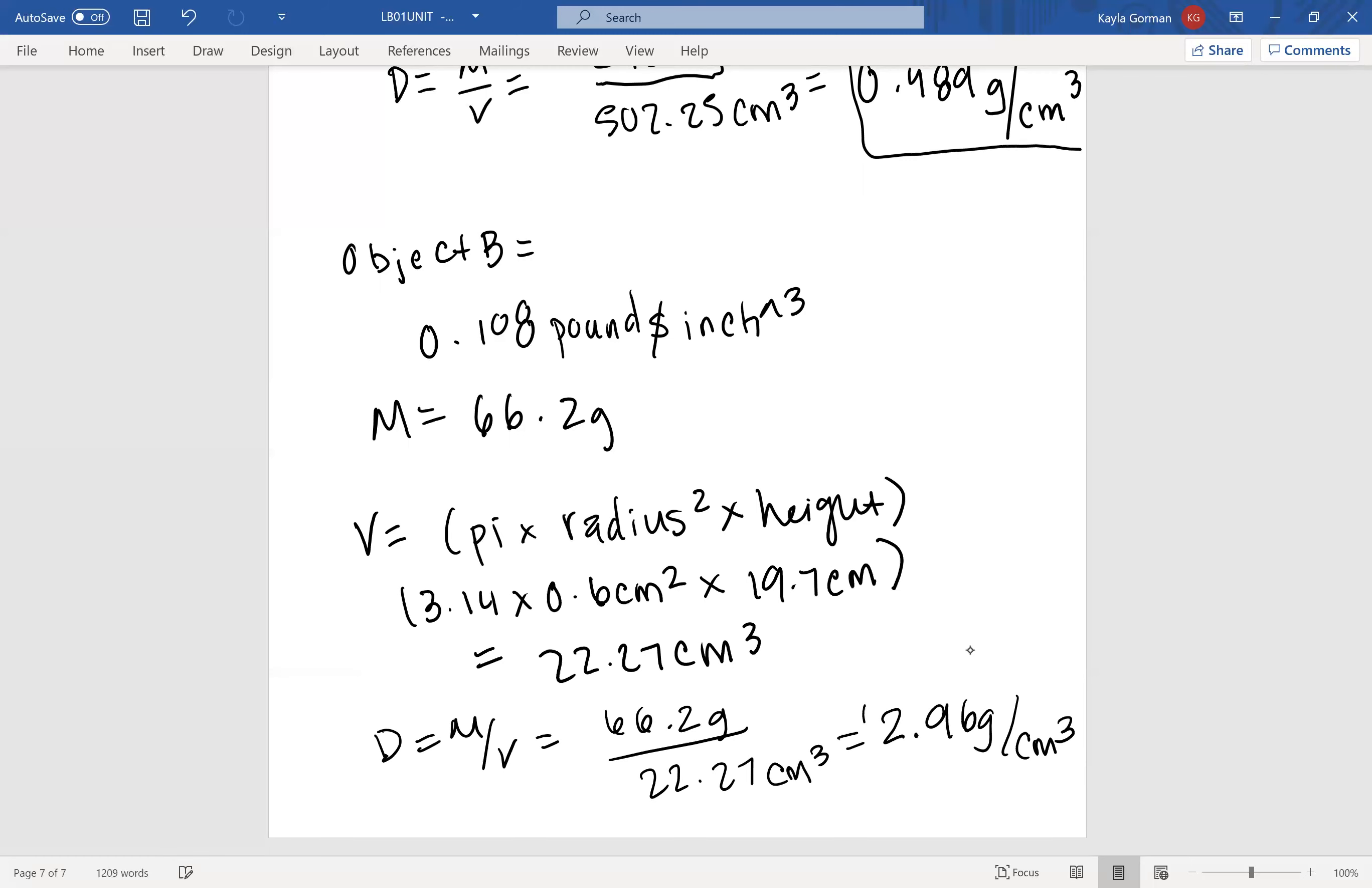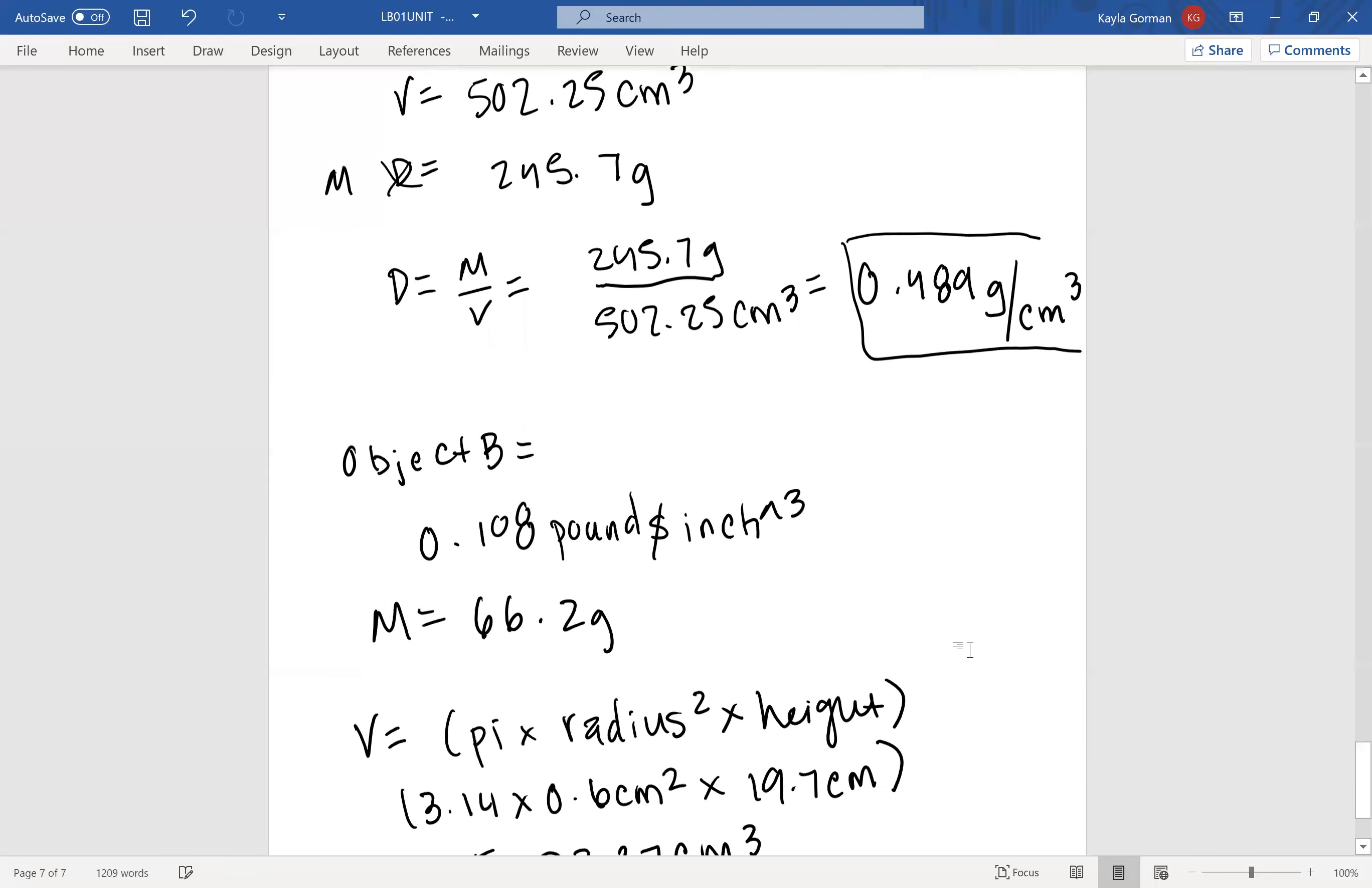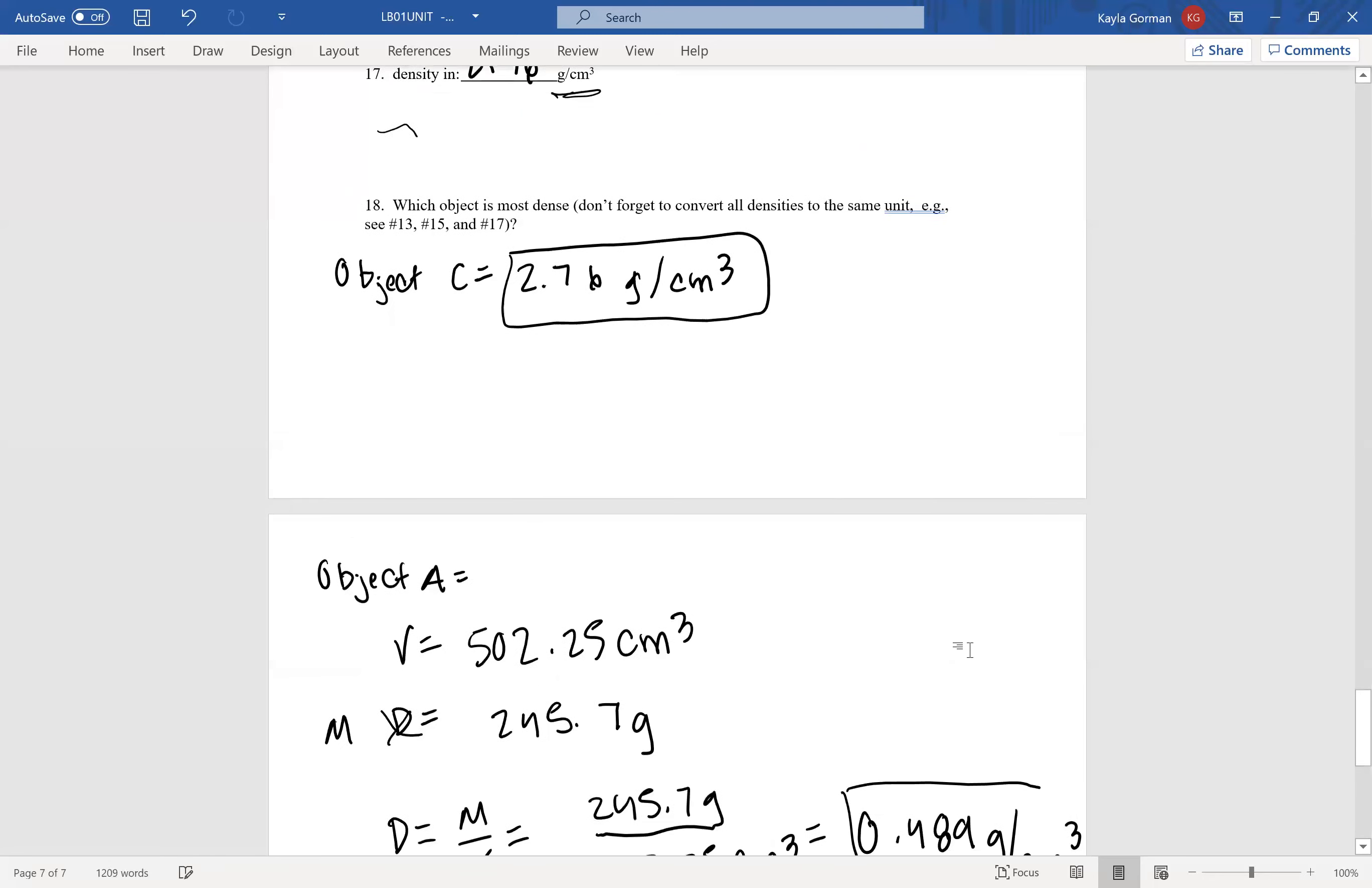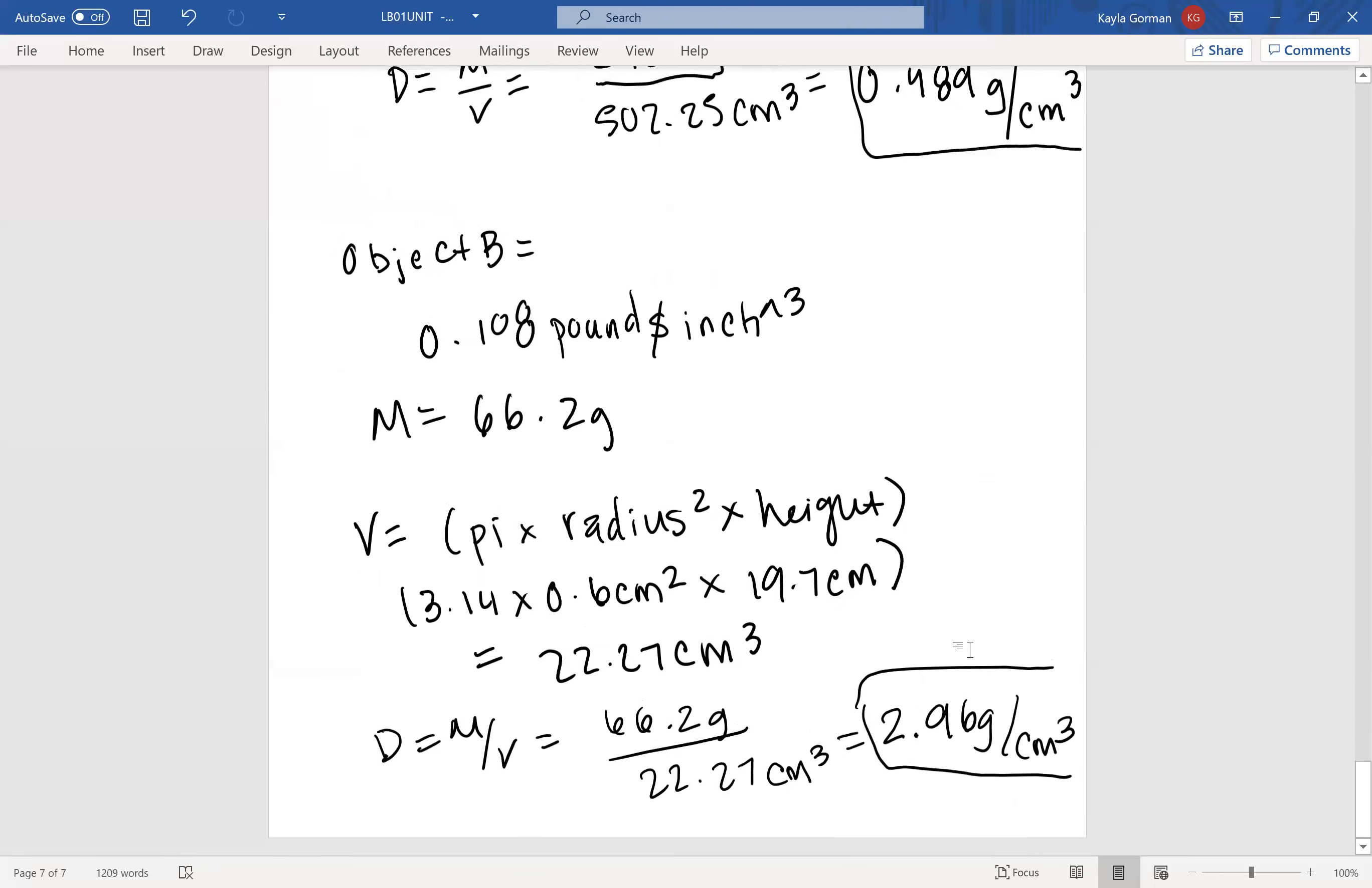So if you have all these numbers, now we have them on the same unit. Obviously A is really not as dense, but B and C are comparable but B is a little more dense. So Object B is the most dense. And there you go, and that's how you do number 18.